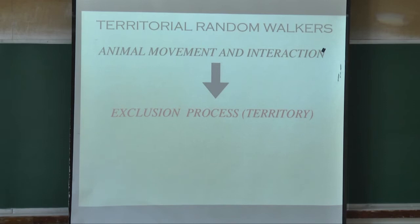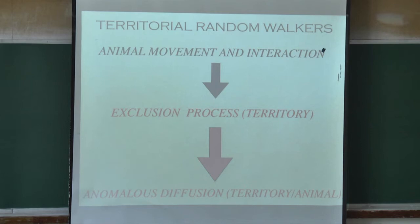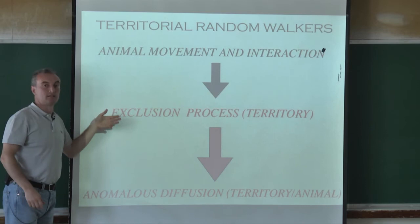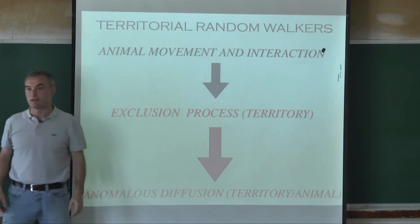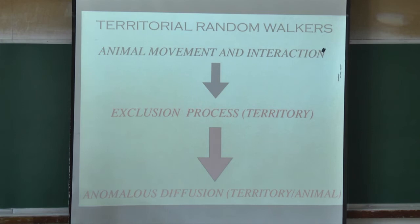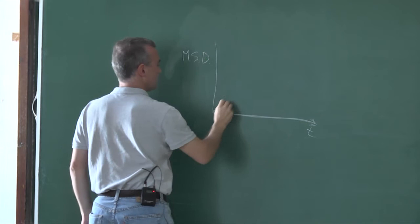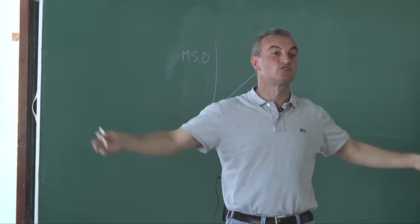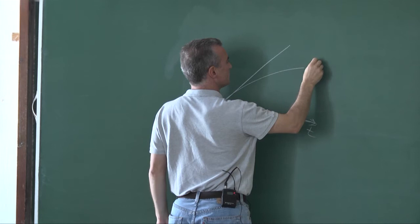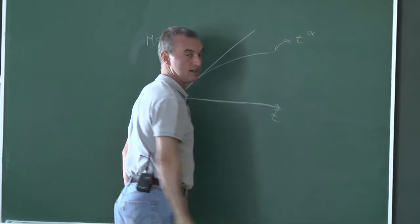If you consider the entire interaction, movement of the territory, and where the animals go, then at long times even random walkers will sub-diffuse because of this territorial exclusion. Sub-diffusion means: if I plot the mean square displacement MSD versus time, for normal diffusion it's linear. For sub-diffusion, MSD is proportional to t to the power alpha where alpha is less than 1. For super-diffusion — which is the area of Lévy walks — it's proportional to t to the power beta where beta is greater than 1.